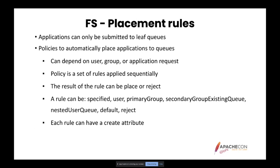'Specified' means the application requests a queue to be placed on and it will be placed onto that queue. 'User' and 'primary group' means the application will go to the live queue named by the user or the user's primary group under root. The 'secondary group existing queue' rule places the application on the first existing secondary group of the user. The primary group is mostly the first group; secondary groups are all the other groups.